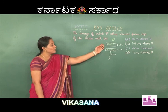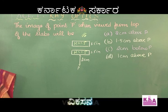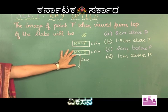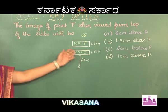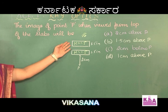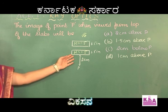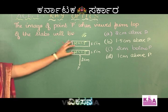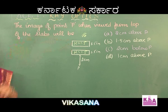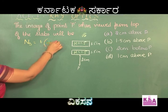We have two slabs of the same thickness and the same refractive index, and they have given us a depth of 2 centimeters which we are not supposed to take into consideration. When we have two slabs, let us take the normal shift of the first slab to be NS1 and the normal shift of the second slab to be NS2. The sum effect will give us the total normal shift, and we know that the formula for normal shift is NS = T × (1 − 1/μ).